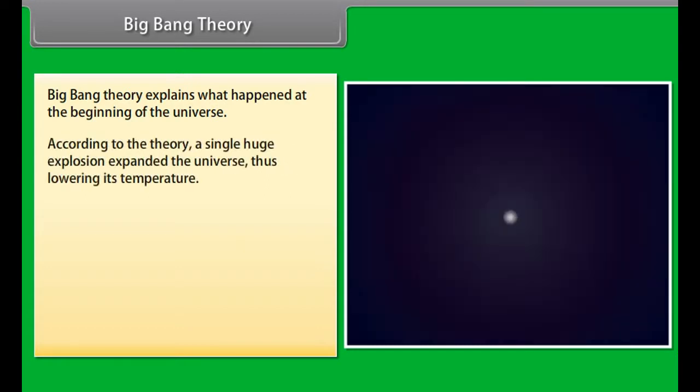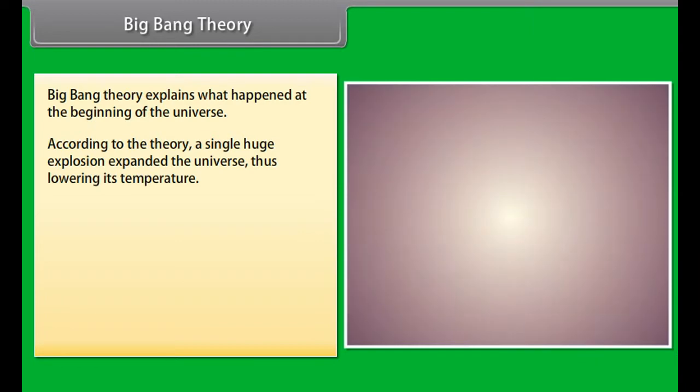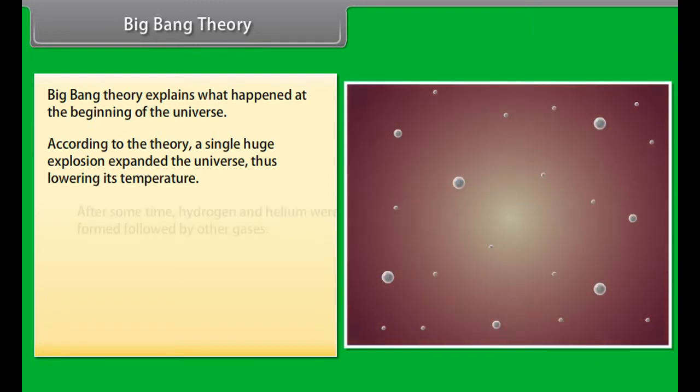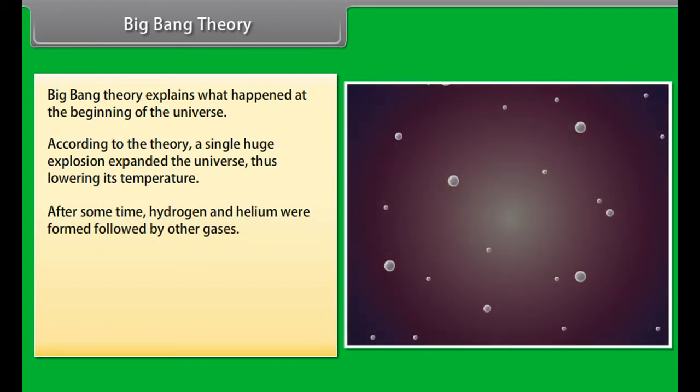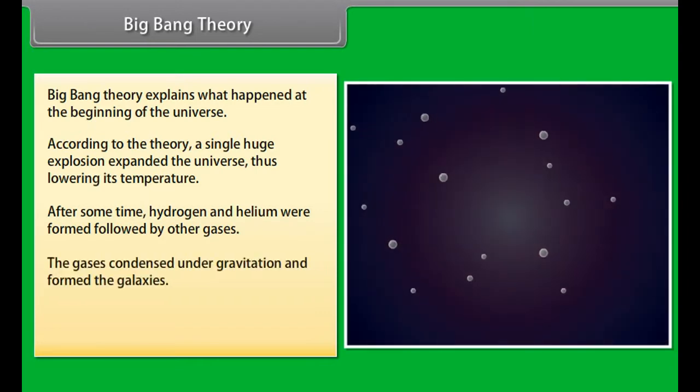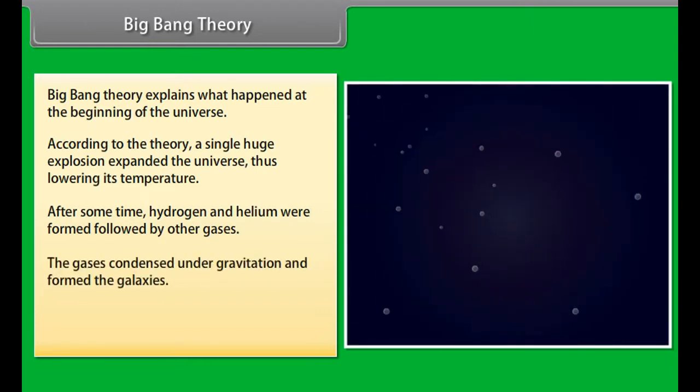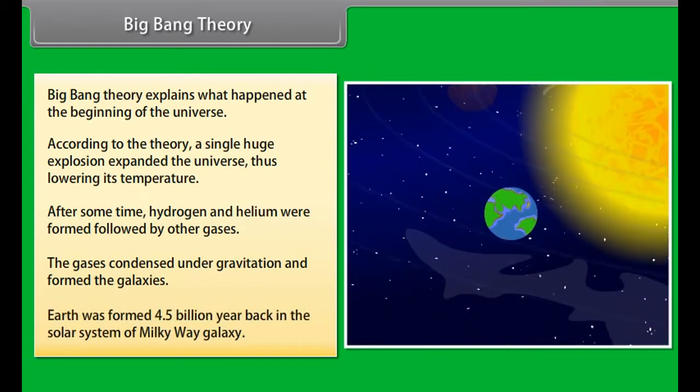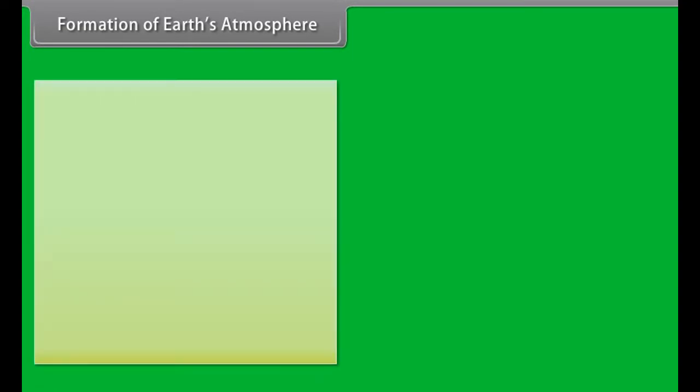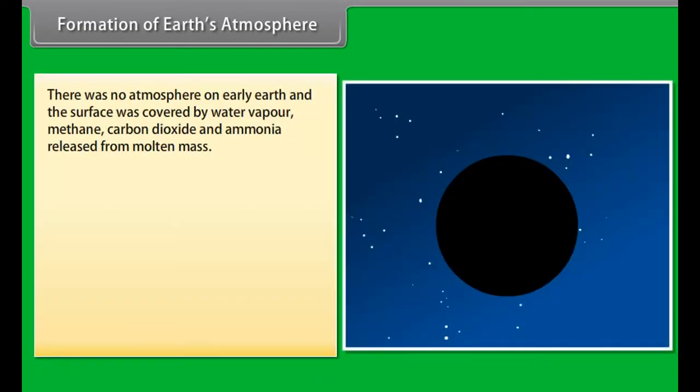Big Bang Theory explains what happened at the beginning of the universe. According to the theory, a single huge explosion expanded the universe thus lowering its temperature. After some time, hydrogen and helium were formed followed by other gases. The gases condensed under gravitation and formed the galaxies. Earth was formed 4.5 billion years back in the solar system of Milky Way galaxy.